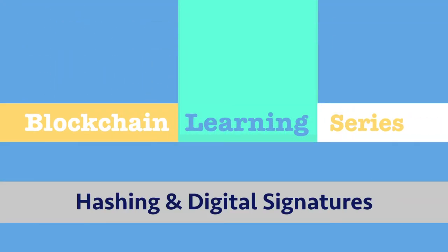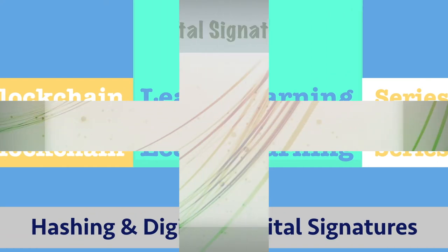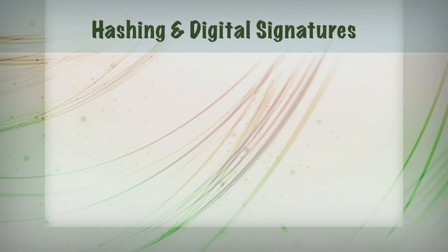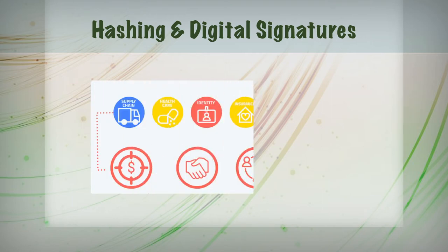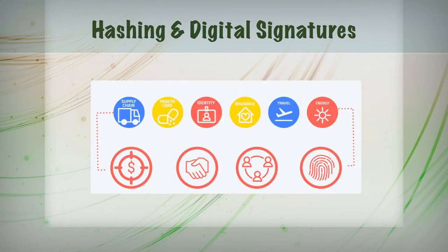Welcome back to the BlockchainGate. Today we're going to be talking about hashing and digital signatures in blockchain. Hashing plays a big role in both the tamper-proof and the trust mechanisms within the blockchain ecosystem.